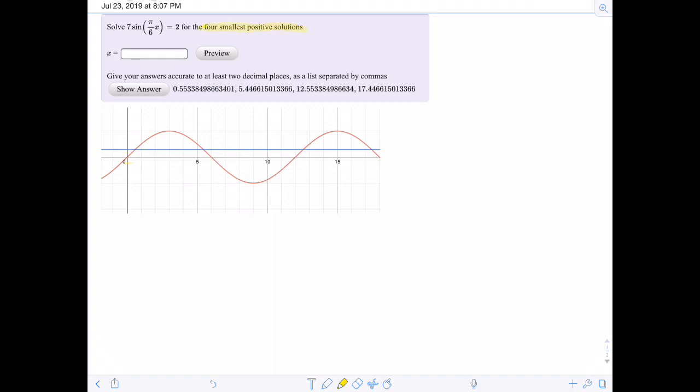They put the smallest positive solutions only because we know that sine is periodic and we can get infinitely many solutions. So we just need to make sure that our x solutions are going to be positive, and just the first 4.